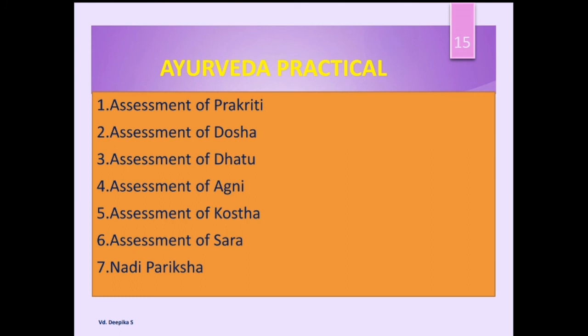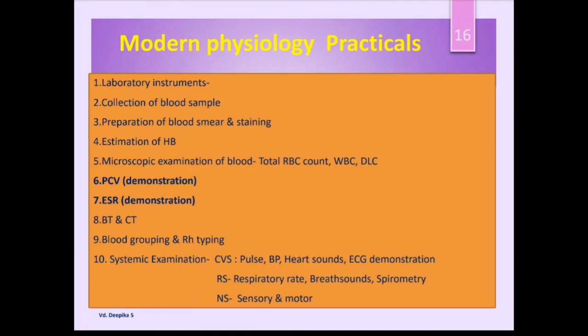Under Ayurveda practicals, we have 7 points: assessment of Prakriti, assessment of Dosha, assessment of Dhatu, assessment of Agni, assessment of Koshtha, Sara, and lastly, the concept of Nadi Pariksha. Coming to modern physiology practicals, we have laboratory instruments, collection of blood samples, preparation of blood smear and staining, estimation of hemoglobin, estimation of BT and CT (bleeding time and clotting time), blood grouping, and Rh. Note that PCV (packed cell volume) and ESR (erythrocyte sedimentation rate) practicals are for demonstration only — they do not need to be performed in exams.